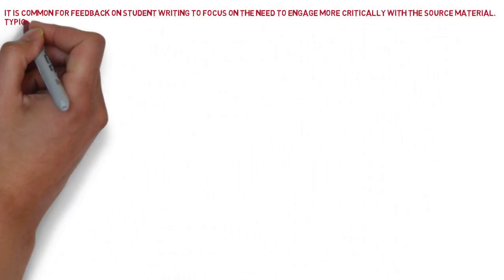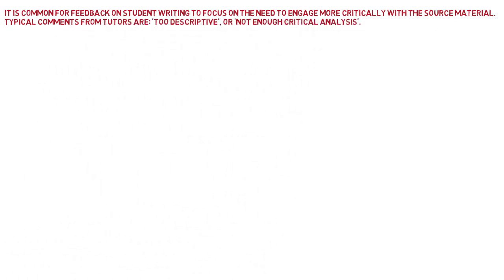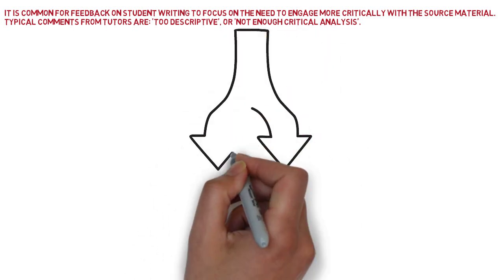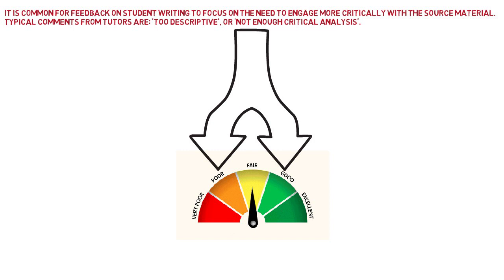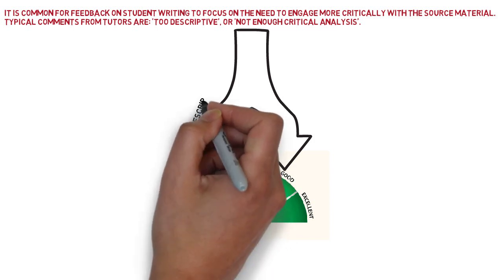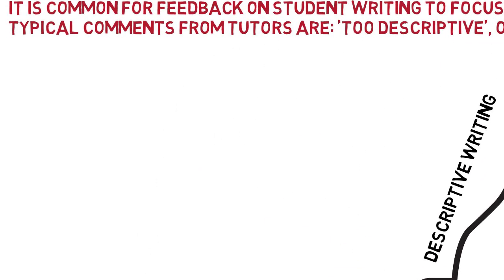One of the differences between undergraduate and postgraduate study, and a common reason why students fail, is because they write too descriptively. You need to read about what descriptive and critical thinking, reading, and writing is all about — do this by yourself at master's level. Try to understand the difference between the two, particularly if you receive feedback from your tutor that said you were writing too descriptively. We'll take a closer look at what this may mean.